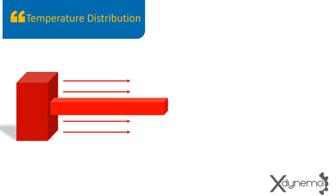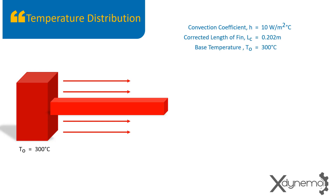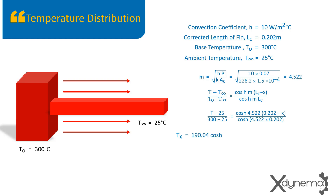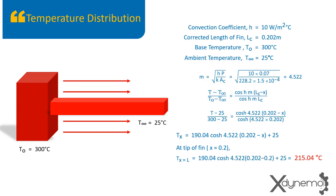On substituting the values of T_naught, T_infinity, M, and L_c in the formula, the temperature distribution in the FIN is obtained as a function of location X along the length of FIN. At the tip of the FIN, where X equals 0.2 meters, the temperature is obtained as 215.04 degrees Celsius.